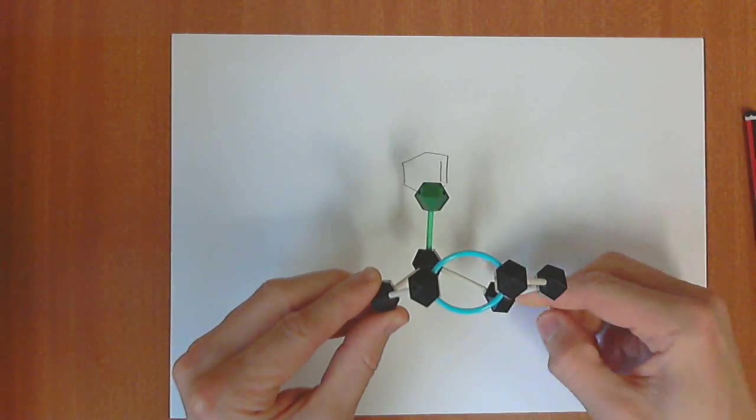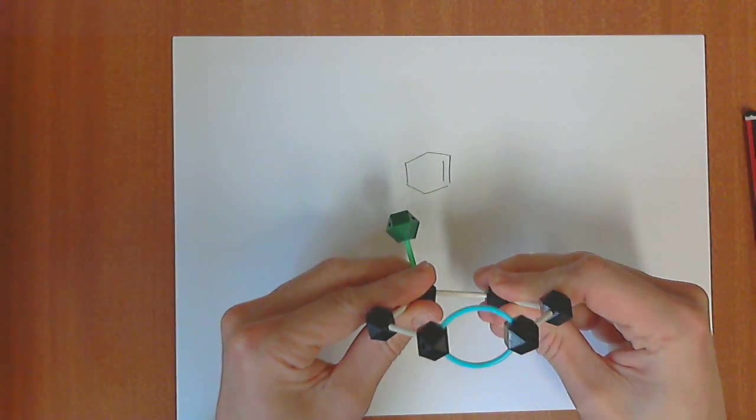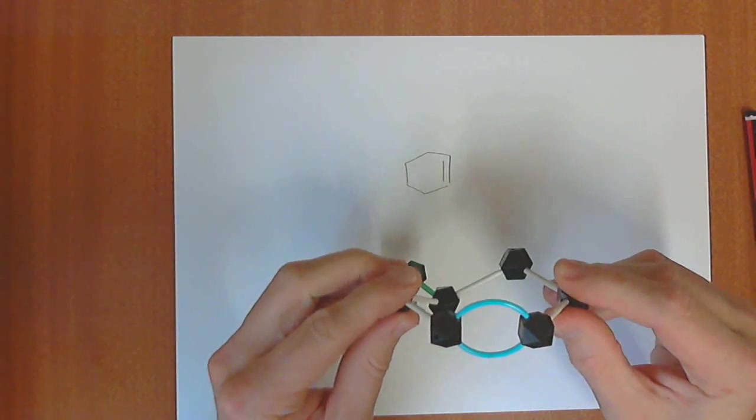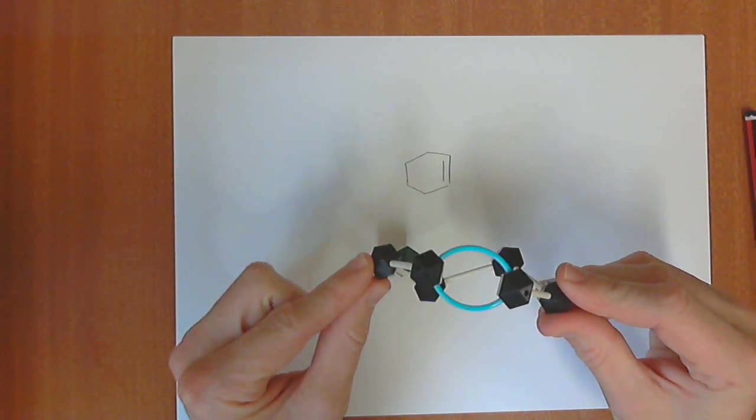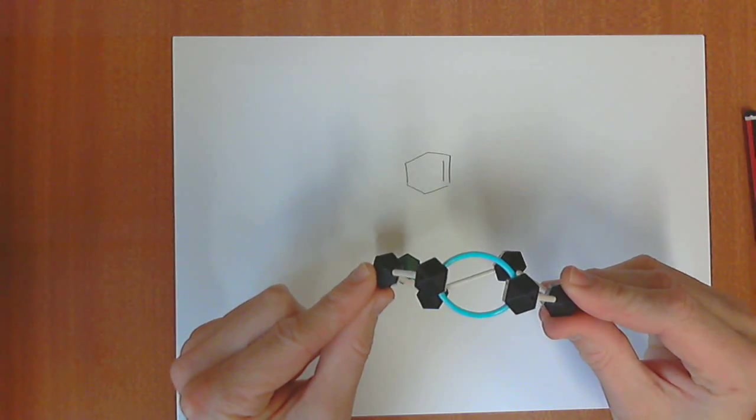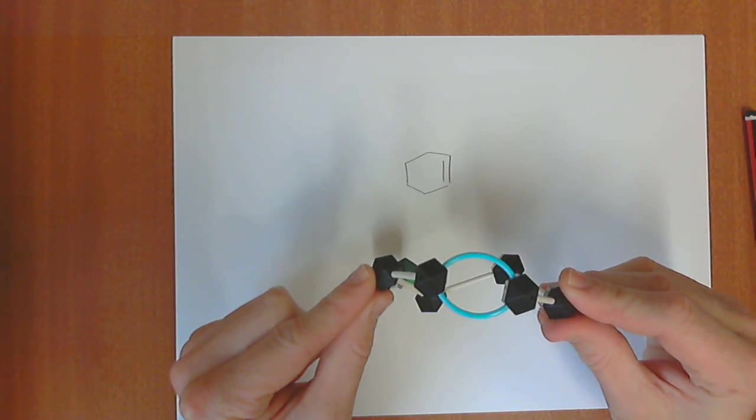That's not ideal. It would prefer to be equatorial. We can switch these two back ones around by doing a conformational switch. The whole thing flips like that. Now when we look at it, that group at the back is now pointing kind of up in an equatorial type of position.